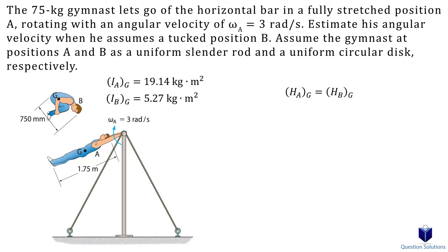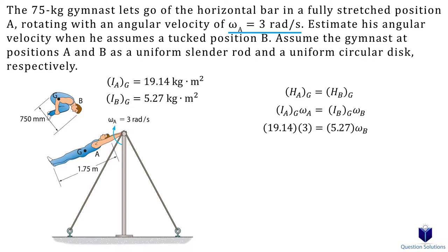We are saying that the initial angular momentum about the center of mass equals the final angular momentum about the center of mass. Angular momentum is the mass moment of inertia multiplied by the angular velocity. We know the mass moment of inertia at the beginning, and the angular velocity is 3 rad/s. On the other side, we have the mass moment of inertia at the tucked position, and we are solving for the angular velocity. So when the gymnast is in the tucked position, he has an angular velocity of 10.89 rad/s.